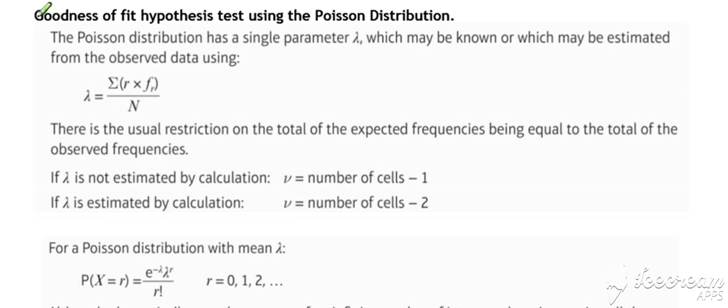A similar idea if we start off by trying to test whether a Poisson distribution is a suitable model. This time if we need to estimate lambda, remember lambda is the expected value, so we could just work out the mean from our observed data and that would be our lambda value because the expected value of any Poisson distribution is equal to lambda. That's the same calculation essentially as being done there.